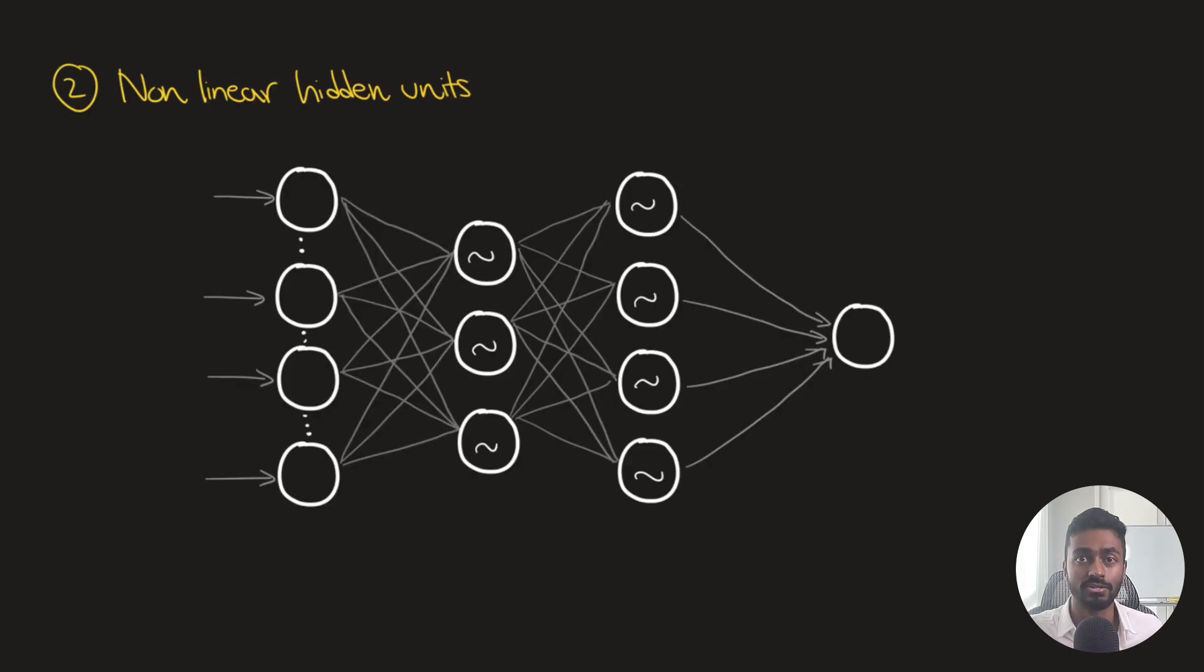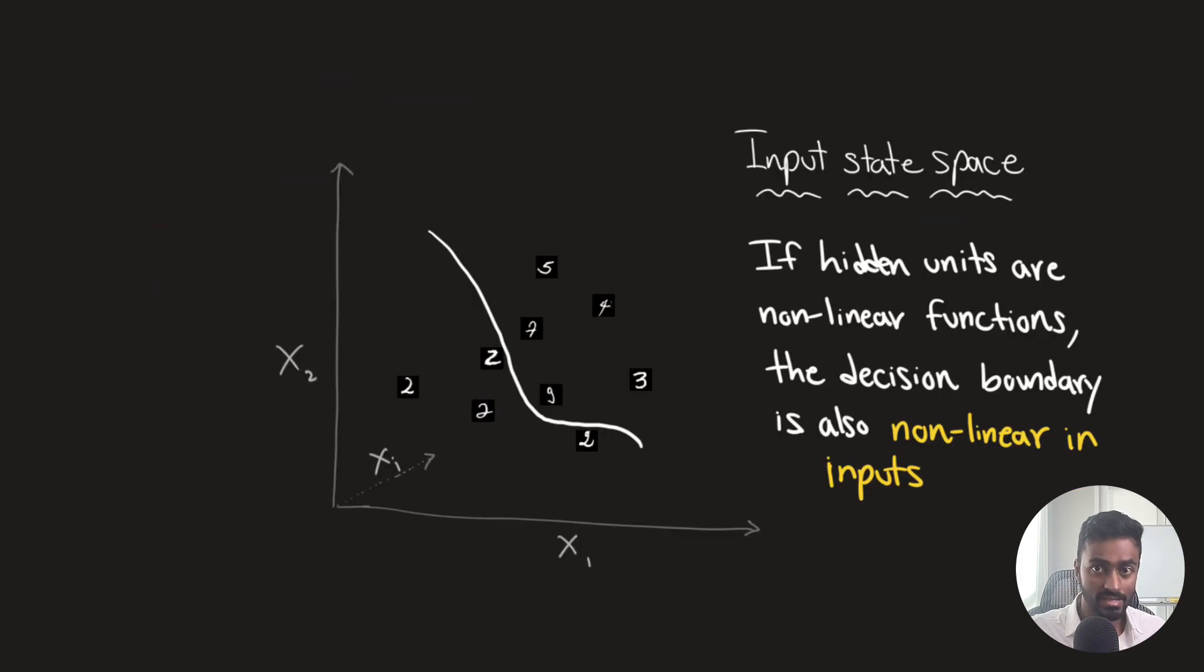And so in order to solve this issue, we can introduce non linear hidden units. With non linear hidden units, if you pass in certain inputs, you will get a non linear function of the inputs at this output neuron. And what that means is that the decision boundary is now also going to be non linear in the inputs, and it can thus better categorize and recognize patterns.